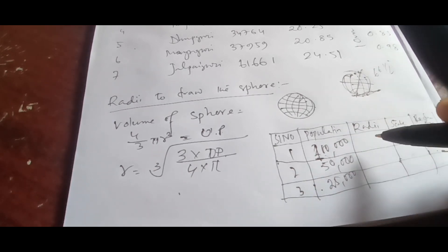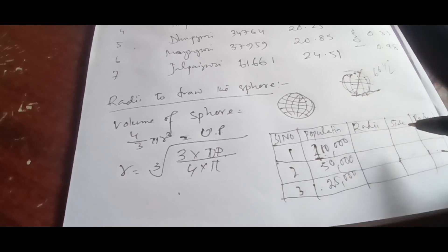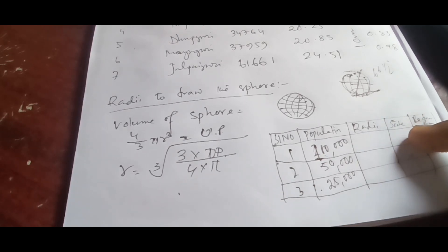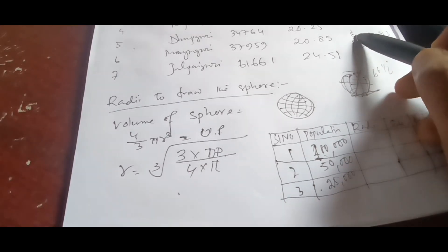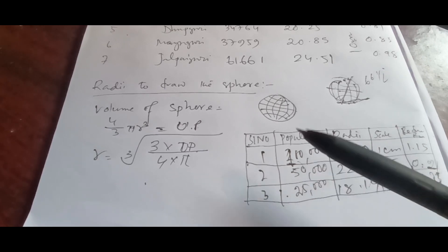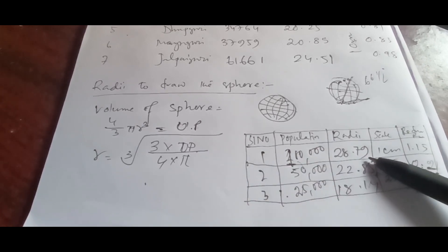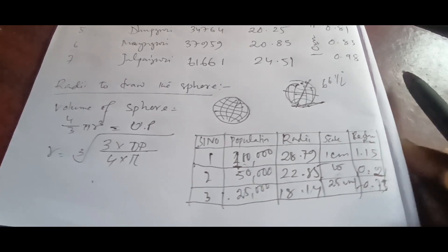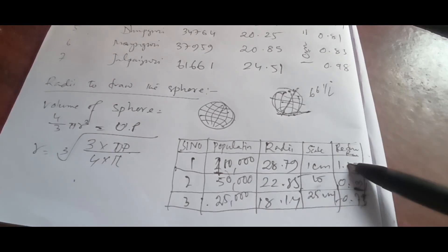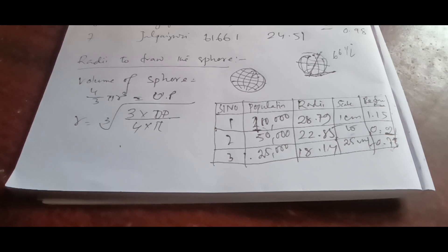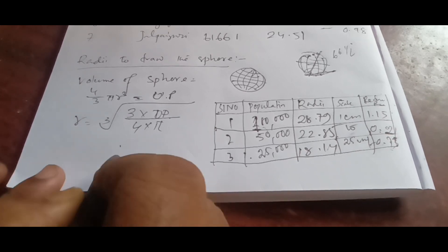Now we'll use the formula to draw the radii. So based on the formula we'll calculate the radii and the scale will be the same scale we actually took here, that is one centimeter equal to 25 units, and then finally the reduced radius. This is the way to calculate. Here I have used the formula to find out the radii: 28.79, 22.85, 18.14. Then we have applied the same scale, one centimeter to 25 units. By dividing these three values by 25 we get 1.15 centimeter, 0.91 centimeter, 0.73 centimeter.